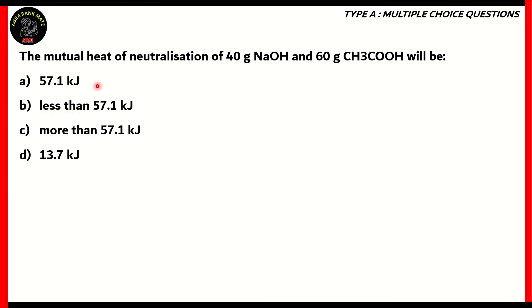Here comes our first question. The mutual heat of neutralization of 40 grams of NaOH and 60 grams of CH3COOH will be: 57.1 kJ, less than 57.1 kJ, more than 57.1 kJ, or 13.7 kJ. Which of these is the right answer? Well, part of this question is static, which means you've got to know the stuff, but some other parts you have to work it out.